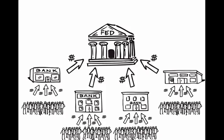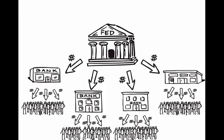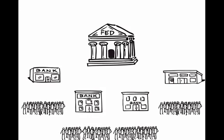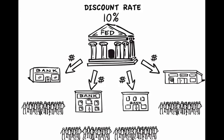Conversely, the Fed will lend money to banks, and banks will lend money to the people. The interest rate that the Federal Reserve charges banks on these loans is called the discount rate. The discount rate plays a major role in most every interest rate that you can think of, from the rate of a home mortgage to the rate of credit cards.